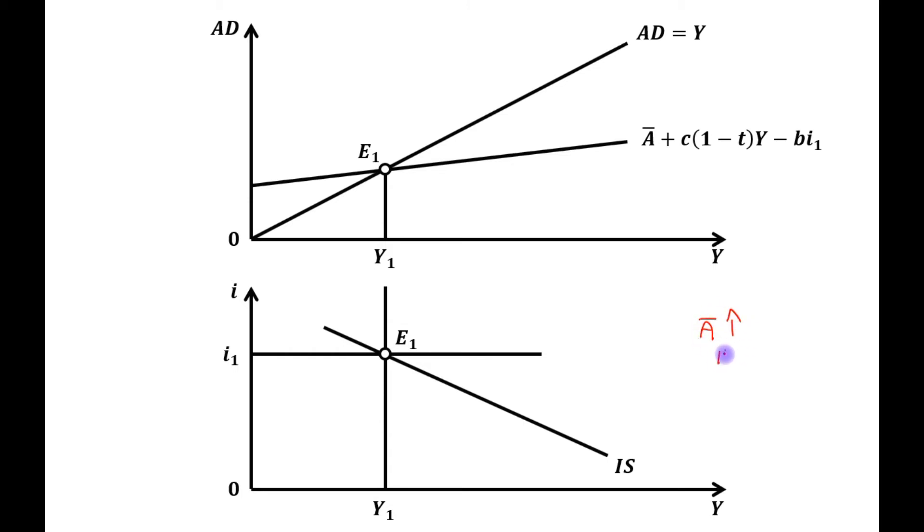Due to the increase in A bar, aggregate demand will be increased and there will be an upward shift in AD curve. You can see this upward shift in AD curve and the gap between these two AD curves will be change in A bar.